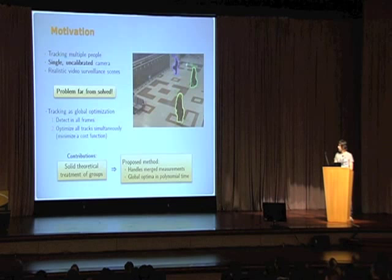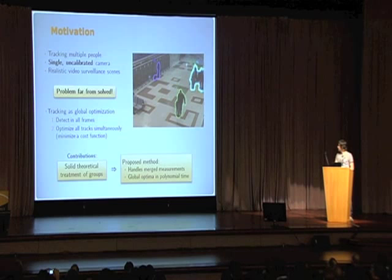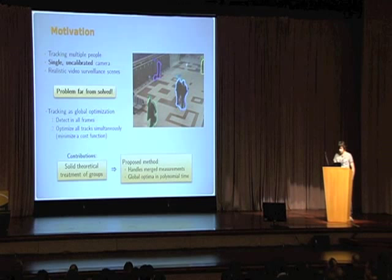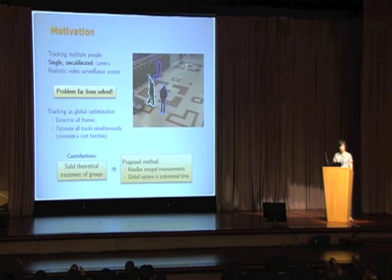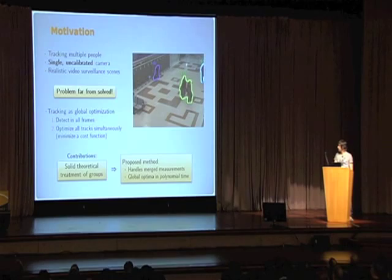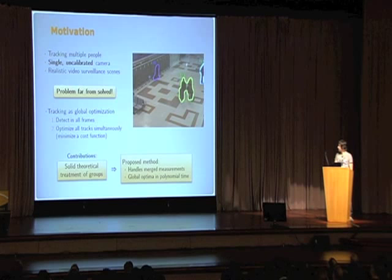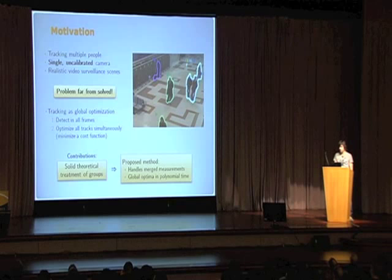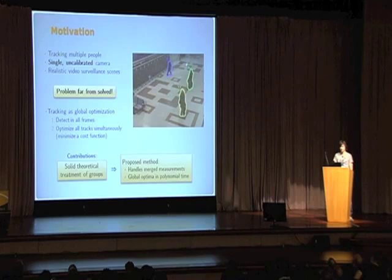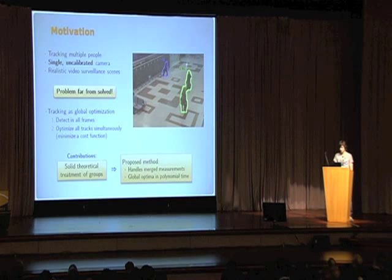The goal of our work is to track multiple people with a single calibrated camera. You can see here a small sample of the output from the algorithm. A successful approach to this tracking problem has been to formulate it as an optimization problem. We start with a set of detections across all frames, such as foreground segmentation, and find a set of tracks that minimizes a well-defined cost function. This contrasts with greedy trackers, which work on a frame-by-frame basis and can get trapped in local minima. Examples include Kalman filters and particle filters.